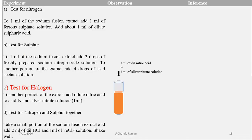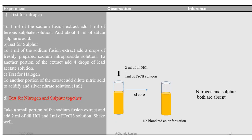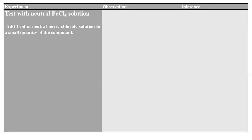Then we test the halogens. We take the test tube with the sample and add 1 mL of dilute HCl and 1 mL of ferric chloride solution, and shake it. If we get a blood-red color, it indicates the presence of both nitrogen and sulfur together. Here we are not getting blood-red color formation. So after elemental analysis, we conclude it shows the absence of any special elements — that is, nitrogen, halogens, and sulfur.